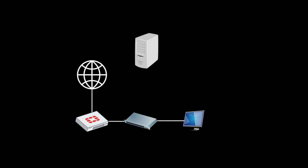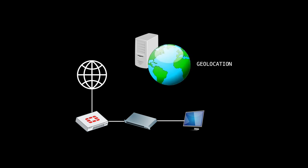One of the most basic security measures we all do, especially now, is to block specific countries using geolocation. Most of us just create a firewall address object of type geographic and apply it to a deny policy, but that's not enough to make your policy bulletproof. You will need to apply a local-in policy as well.